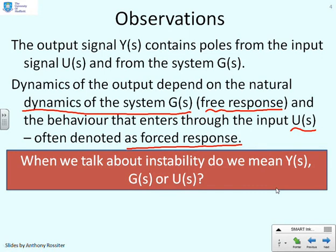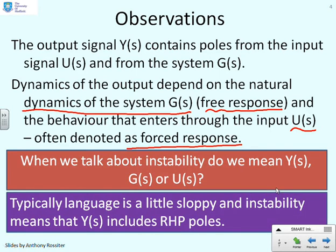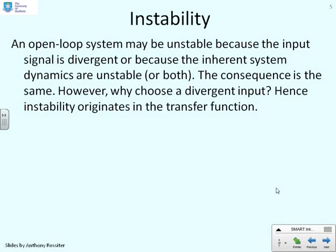Here's the key question: when we talk about instability, are we talking about the signal Y, the system G, or the signal U? What we usually mean when we talk about instability is that the signal Y includes right half plane poles, and therefore the signal Y is divergent and goes to infinity. Since Y equals G times U, an open loop system may be unstable — or the corresponding output may be unstable — because either the input signal U is divergent, or because the inherent system dynamics G are unstable, or possibly both.